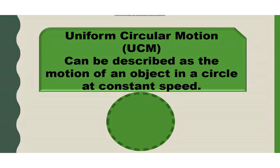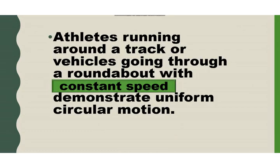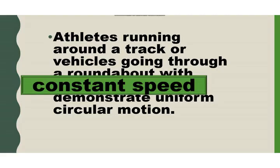Uniform circular motion can be described as the motion of an object in a circle at a constant speed. Take note: constant speed. As the object moves in a circle, it is constantly changing its direction. For example, athletes running a track or vehicles going through a roundabout with constant speed are examples of uniform circular motion.